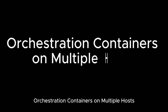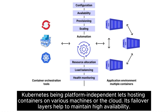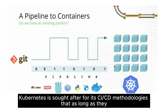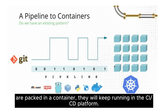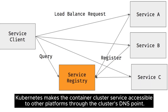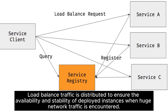Use cases of Kubernetes. Orchestrating Containers on Multiple Hosts: Kubernetes, being platform-independent, allows hosting containers on various machines or in the cloud. Its failover layers help maintain high availability. Running on CI/CD Pipeline: Kubernetes is sought after for its CI/CD methodologies — as long as applications are packed in a container, they will keep running in the CI/CD platform. Discovering Services and Workload Balancing: Kubernetes makes container cluster services accessible to other platforms through the cluster's DNS. Load-balanced traffic is distributed to ensure availability and stability when huge network traffic is encountered.